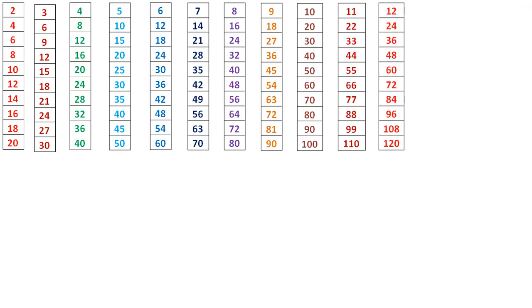12 times 1 is 12, 12 times 2 is 24, 12 times 3 is 36, 12 times 4 is 48, 12 times 5 is 68, 12 times 6 is 72, 12 times 7 is 84, 12 times 8 is 96, 12 times 9 is 108, 12 times 10 is 120.